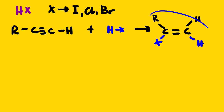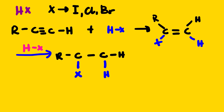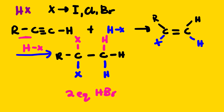If we take the very same product and react it with hydrogen halide again, we are going to no longer have a double bond but a single bond. The hydrogen will go to the carbon that already has hydrogen, and the halogen will go to the carbon with the halide. Sometimes you might see two equivalents of HBr — just know that it goes directly from the alkyne to the geminal dihalide product.